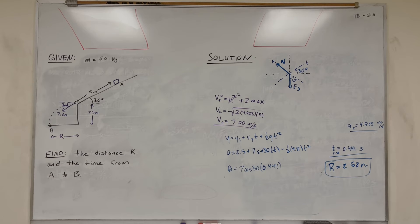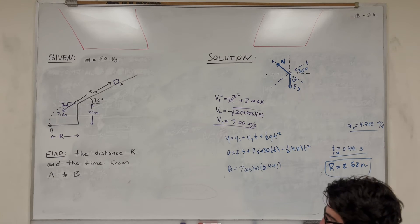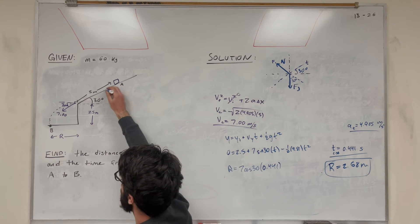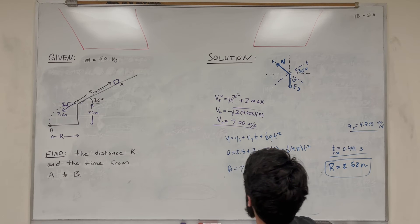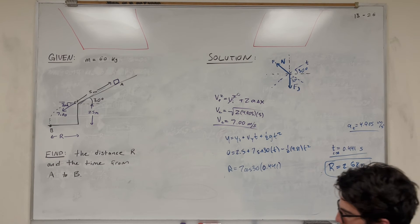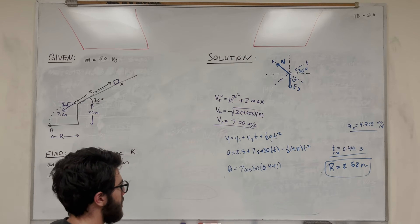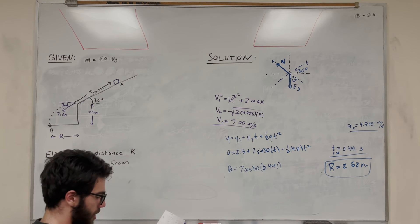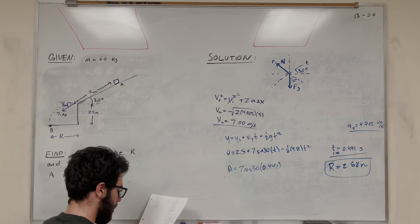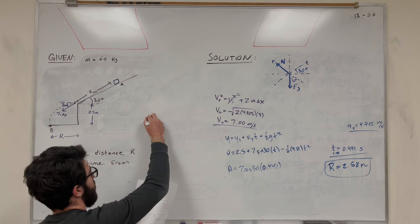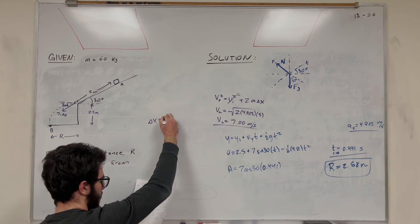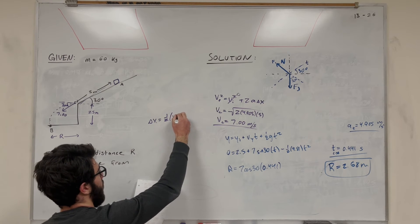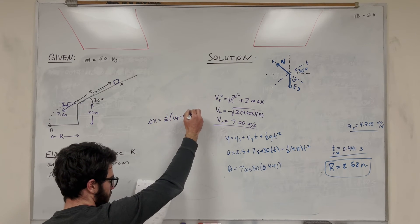So now we just need to find the time it takes to go all the way from A to B. So we found the time from C to B, so let's go ahead and find the time from A to C, the time it takes to go down this ramp here. So what do we know? We know the acceleration during that period is 4.905 meters per second squared. So if we want to find the time it takes to do that, we're just going to use another one of those equations. That equation is going to be delta X equals 1 half times V final minus V initial times time.